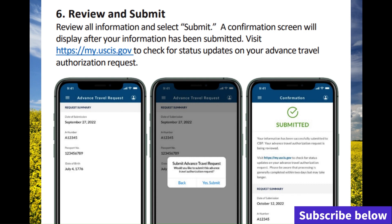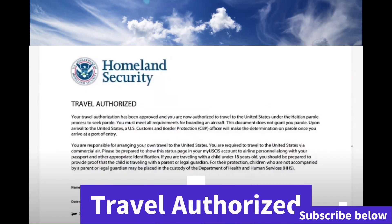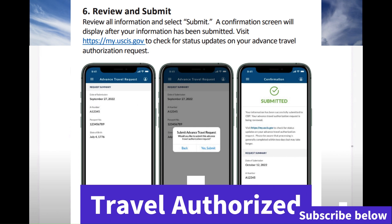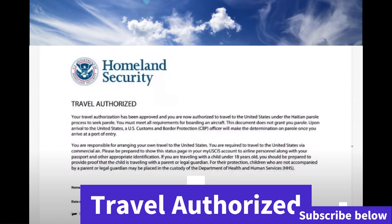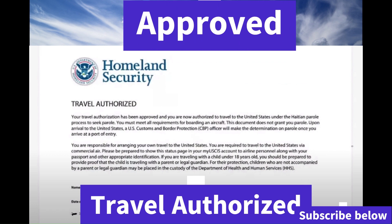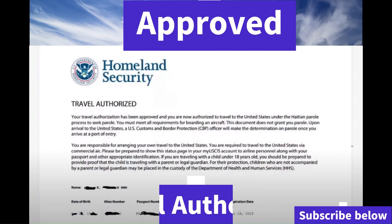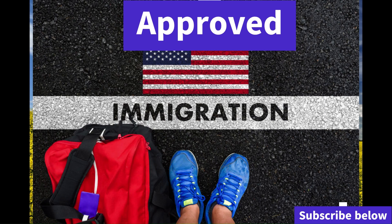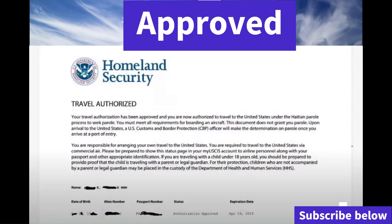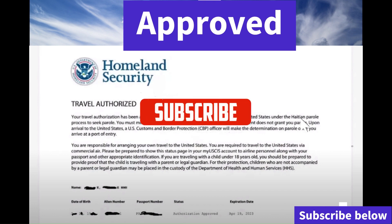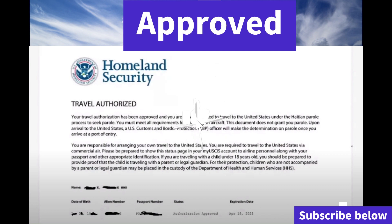The next step is the security travel authorization that we requested using the CBP app. As you can see on the screen, that person was granted and approved to travel to the US. Once you're approved to travel, you have 90 days to travel to the US, or this form is going to expire. Once it's expired, you cannot travel — we have to reapply. So come to the US within those 90 days.